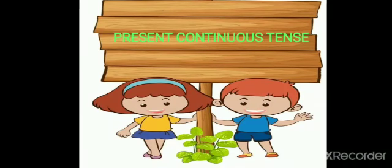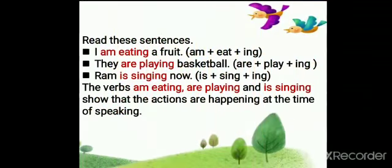Present continuous tense. Read these sentences very carefully my dear students. I am eating a fruit. They are playing basketball. Ram is singing now. The verbs 'I am eating,' 'are playing,' and 'is singing' show that the actions are happening at the time of speaking. These sentences are in present continuous tense.